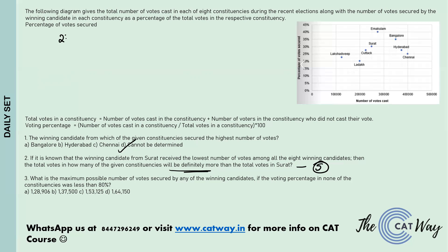For Ernakulam, total votes cast are 2,75,000. This represents 80% of total votes, so total votes equals 2,75,000 divided by 0.8. The winning candidate secured 40% of that total. This gives us the maximum value: total votes in Ernakulam at minimum voting percentage, and multiplying by 0.4 gives the votes secured by the Ernakulam candidate.